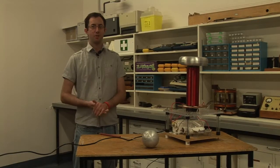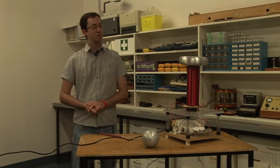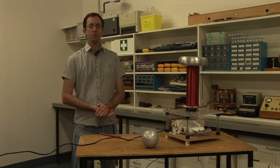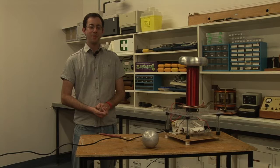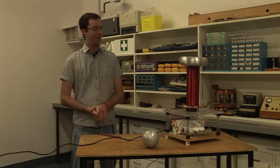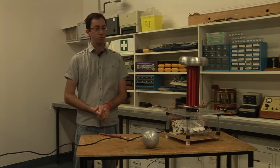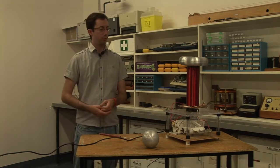You will hopefully have seen the Van de Graaff generator video by this stage. This one here I reckon is a bit more interesting than the old Van de Graaff, a bit more energetic. This is the Tesla coil. It's essentially a really high voltage transformer. Actually, there's about three transformers involved.